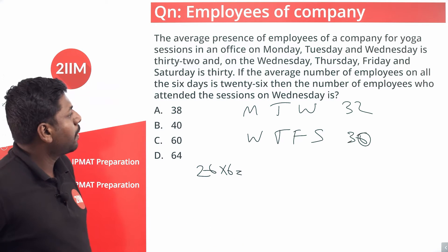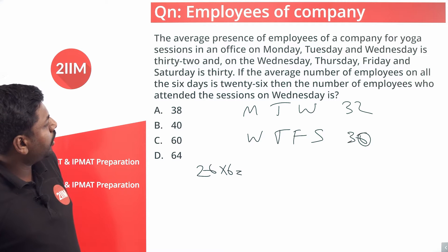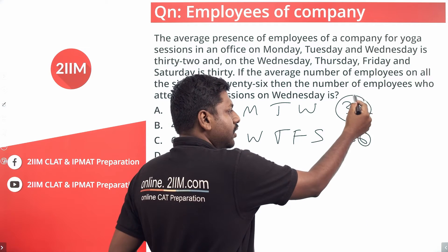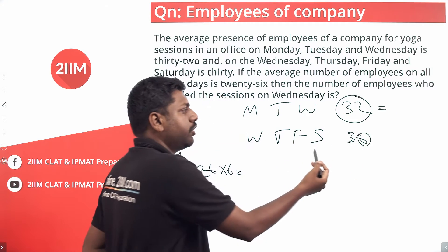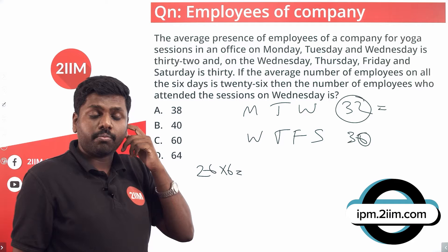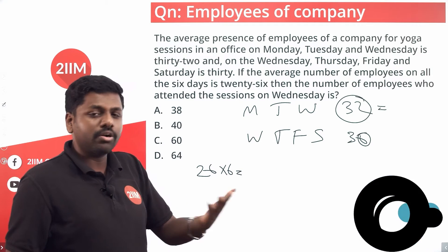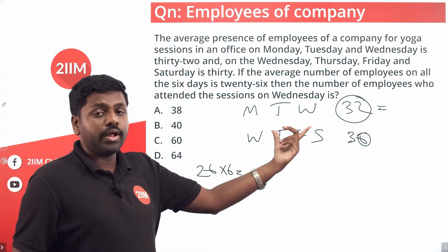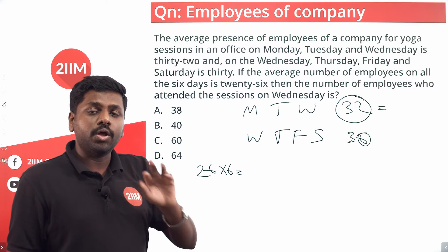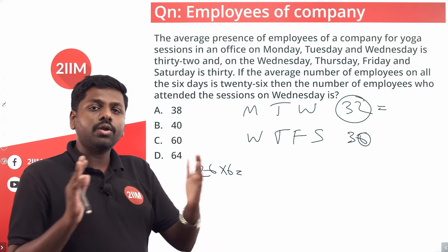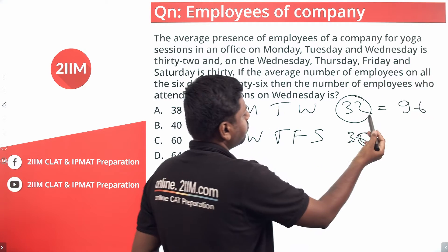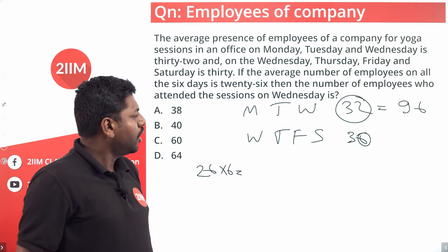We need to find the number of employees who attended the session on Wednesday. Monday, Tuesday, Wednesday on an average is 32, so what is the total going to be? 32 into 3. In any which way, what we want to find out is the total number of people, so this is 32 into 3, which is 96 people.